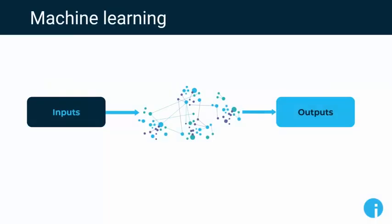First things first: what is machine learning? Machine learning is fundamentally a way of taking a set of inputs, putting them through a potentially quite complicated mathematical function, and getting a set of useful outputs at the end that you can make decisions based on. The inputs could be the composition or structure of a chemical, or previous experimental results.